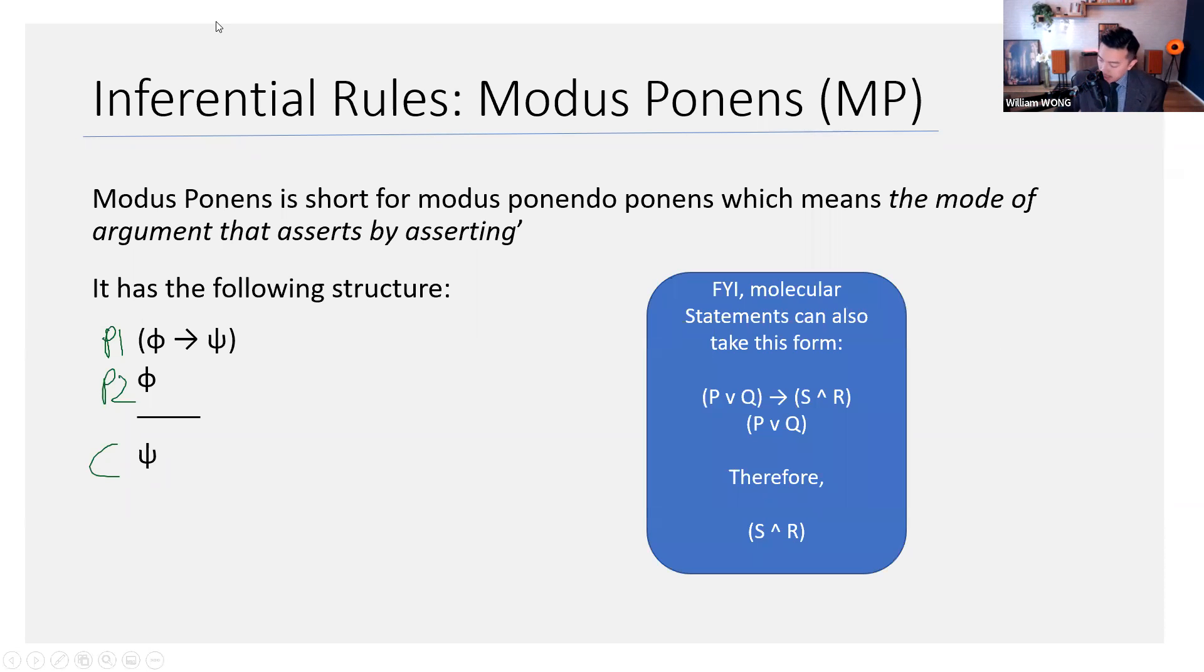Now, notice that when we apply modus ponens, it could also be with antecedents and consequences or consequence of a molecular form. So, taking a look at this blue box, we can see P or Q entails S and R. We assert P or Q, and then we can assert the consequence of premise one, which is S and R. And that's why I've used these Greek letters here. They could be really anything. It doesn't have to be an atomic. It could be a complex thing.